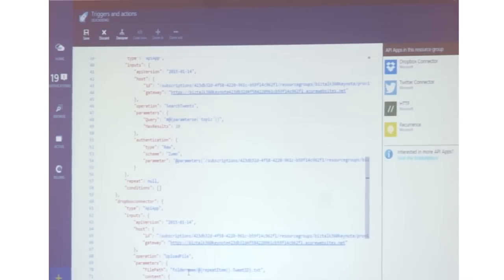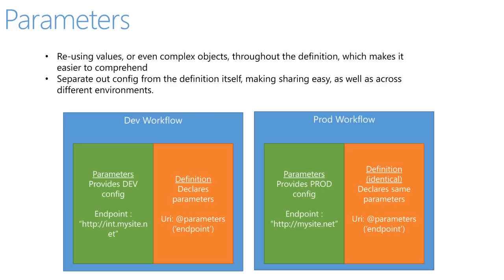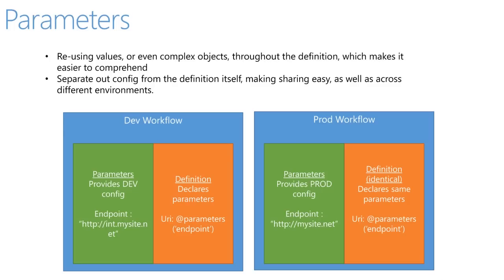Parameters are also very useful because they allow you to separate out config from the actual definition. You don't have to include the value in the workflow definition — every time you create a workflow you can pass the parameters in. For example, if you have a definition you want to use for both an internal and a production environment, you'd take the endpoint out, use a parameter called 'endpoint', and pass in mysite.net for prod and int.mysite.net for dev. This allows you to not have to maintain a whole bunch of different definitions.